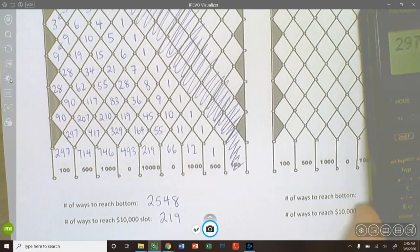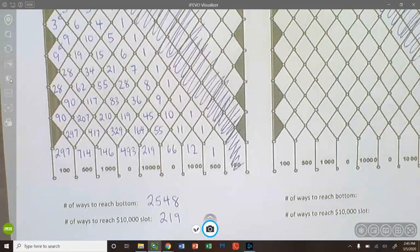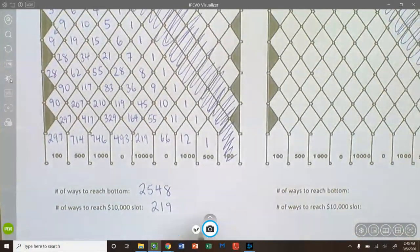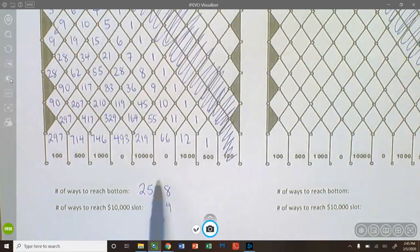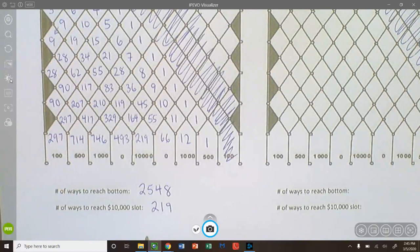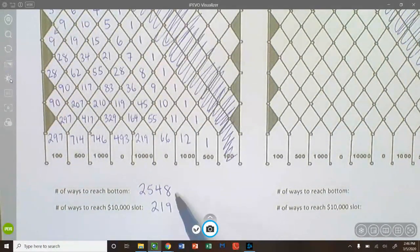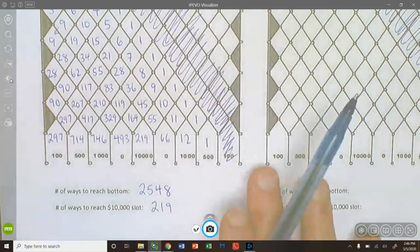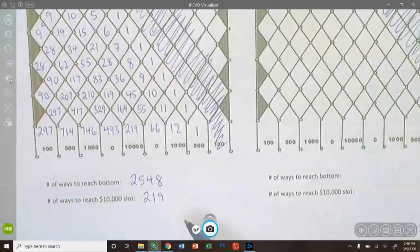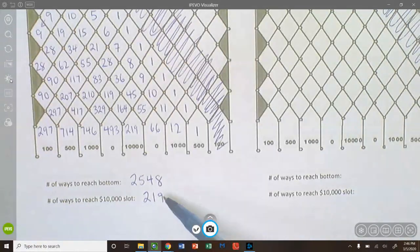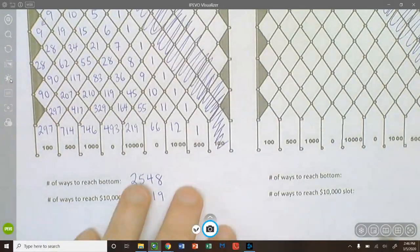We have fully analyzed the number of ways to get to each bin. Now, if you wanted to analyze your chances of dropping from slot A and getting into any of these slots, specifically the 10,000 one, I mean, we all want to win the $10,000, we need to add up the total number of ways there are to reach the bottom. So just do a little total 297 plus 714, 746. And I think the hardest part of this assignment for you guys is being careful to do your additions, right? So you got 2,548 ways that a Plinko chip can zigzag its way to the bottom. Of those ways, 219 reach the $10,000 slot.